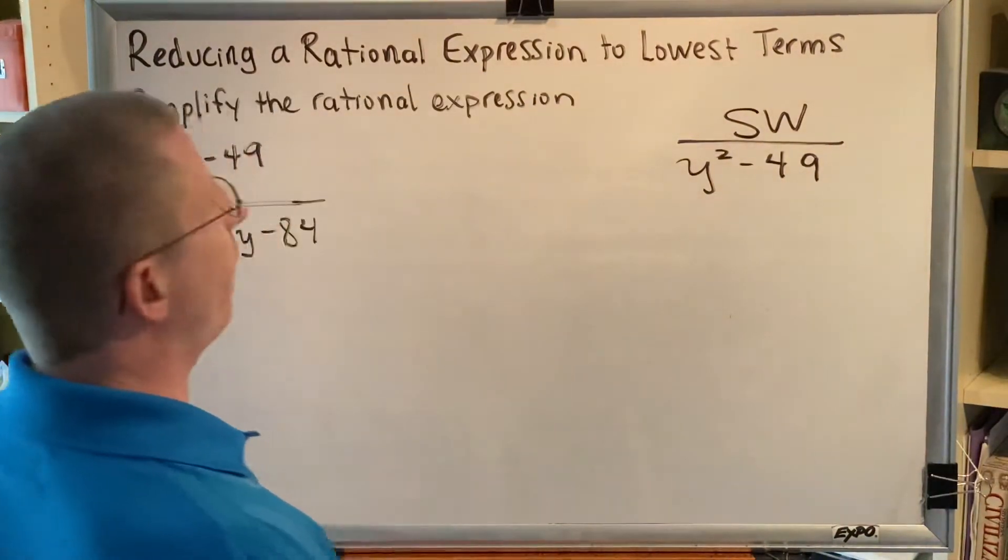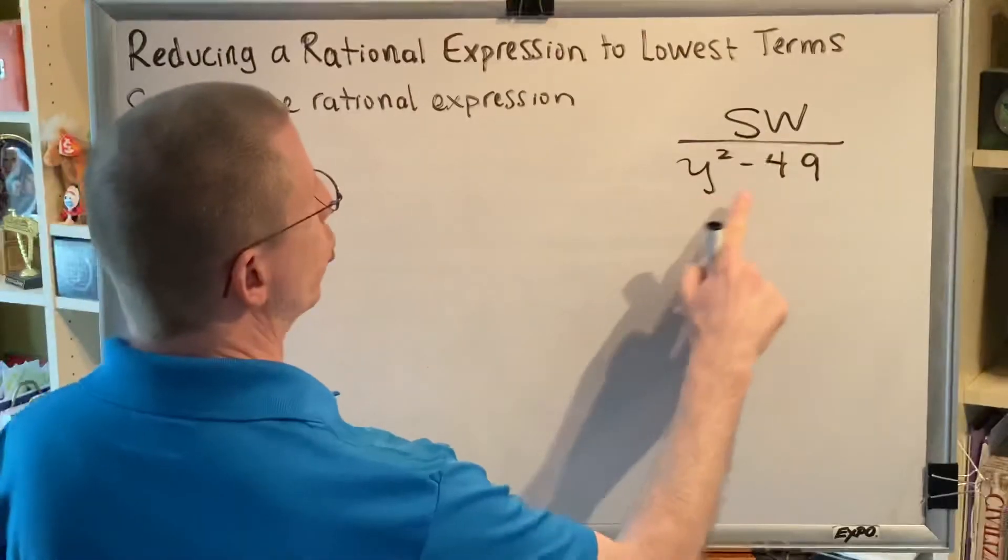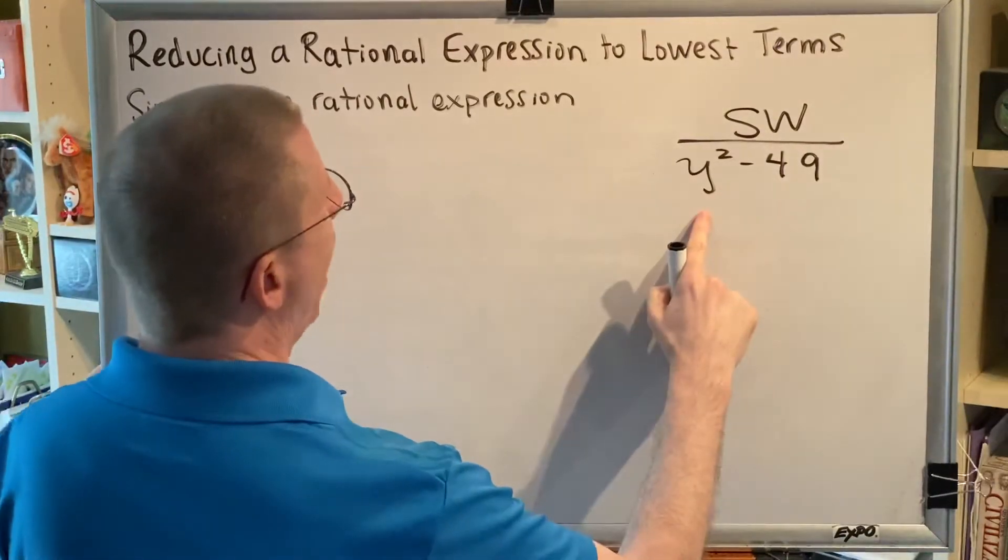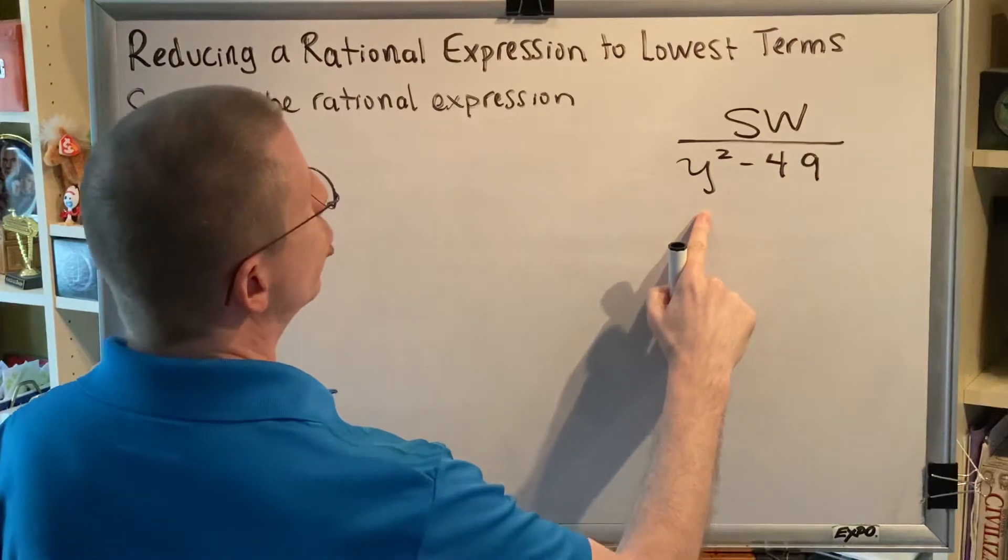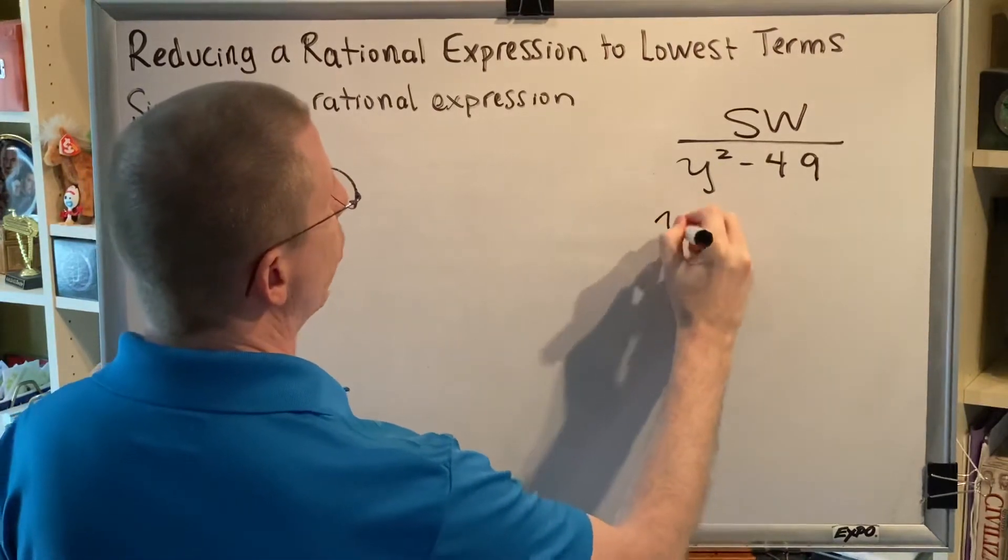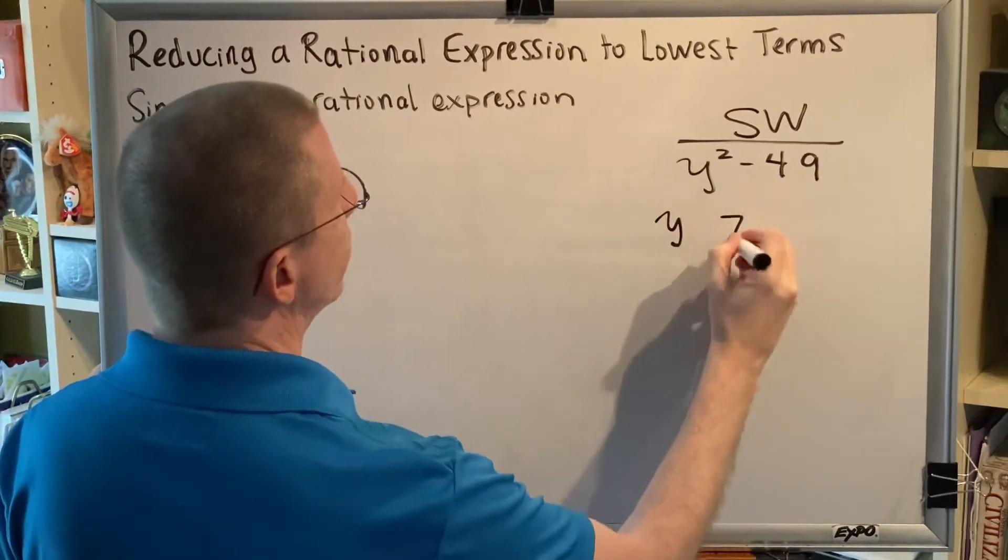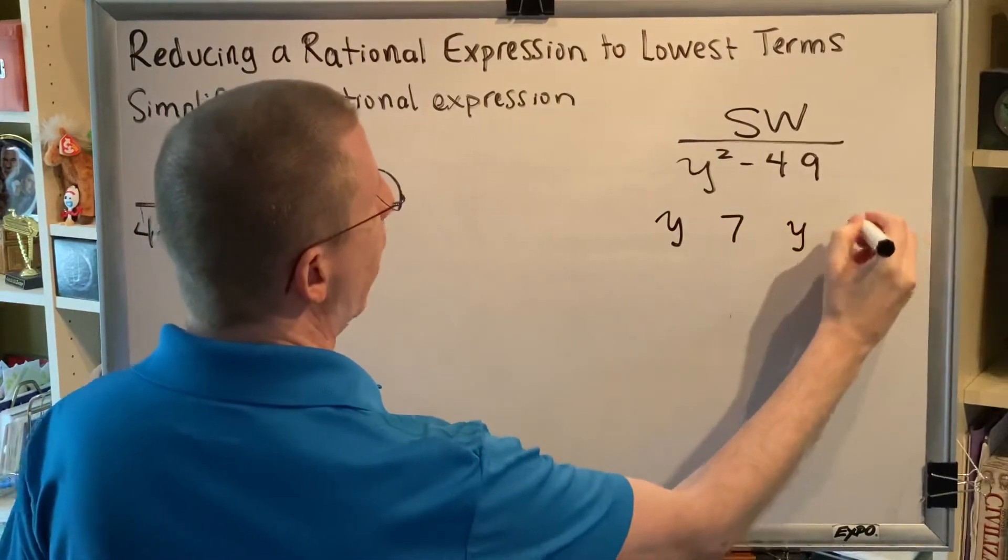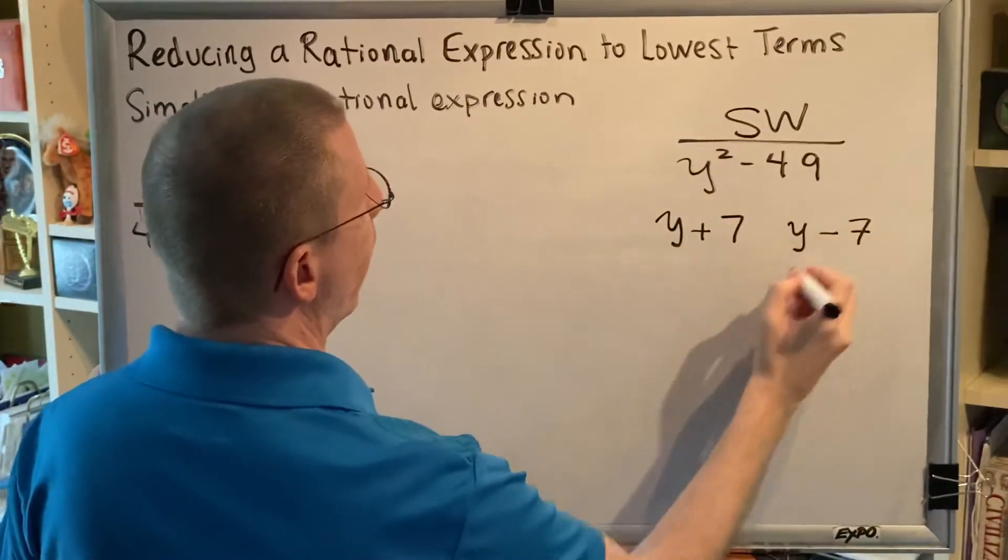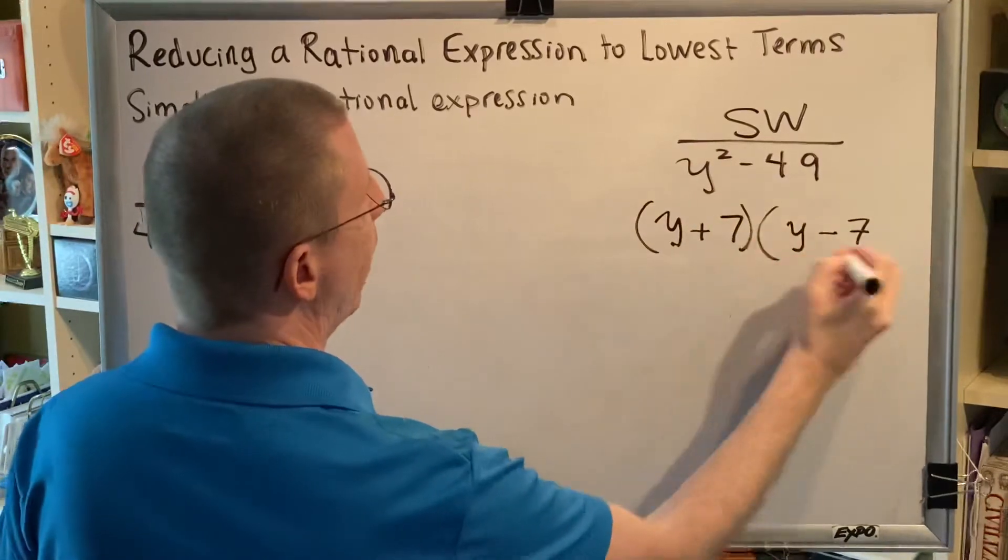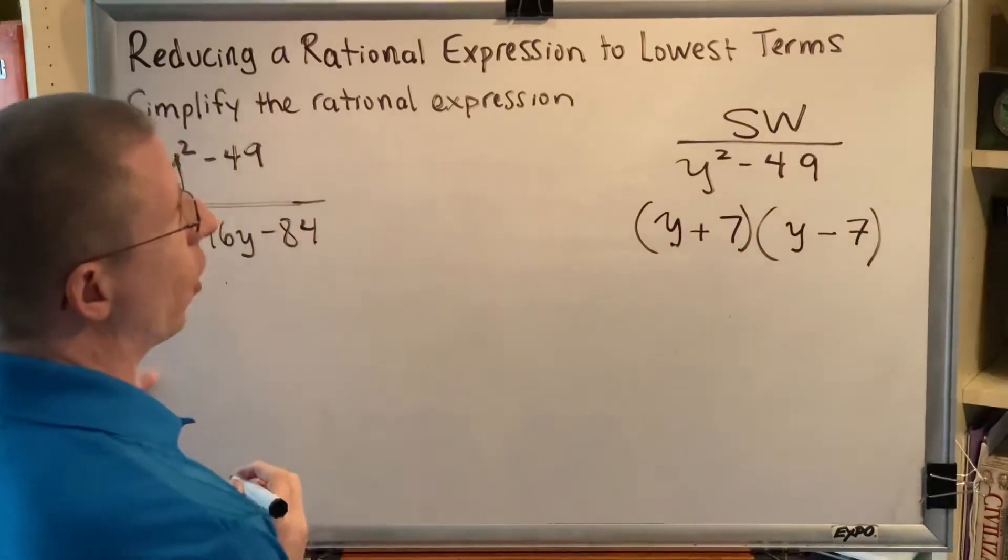Now we're ready to factor. To factor a difference of squares, you take the square root of both of these things, and you write them side by side. So the square root of y squared is y. The square root of 49 is 7. And we're actually going to write that twice. And with one of them, we're going to put a plus in the middle, and the other, we're going to put a minus in the middle. And this is how we factor a difference of squares.